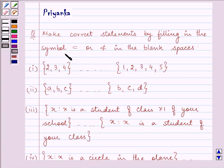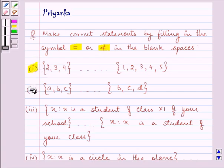Make correct statements by filling in the symbol ⊂ or ⊄ in the blank spaces. This symbol represents that the first set is a subset of the other set, and this symbol states that it is not a subset. If every element of this set is also an element of this set, then we say that this is a subset of this. We need to fill in all these blanks with these symbols. Let us do the first part.